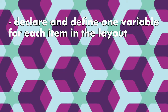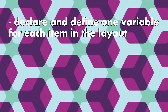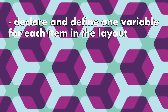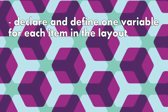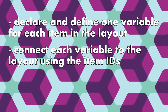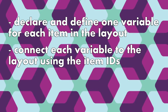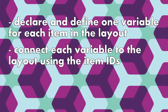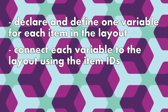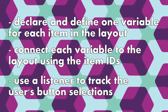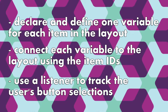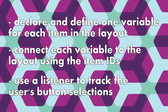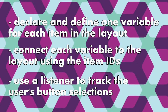The first step will be to declare and define one variable for each of the items in our layout. Then connect them to our layout using the item IDs. Then we'll use a listener to track when the user selects a different radio button.